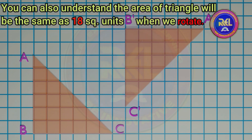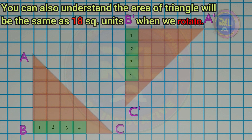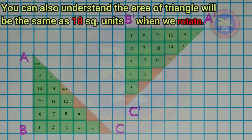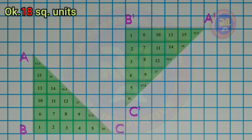You can also understand the area of the triangle will be the same — 18 square units — when we rotate. Counting the unit squares after rotation confirms: 18 square units.